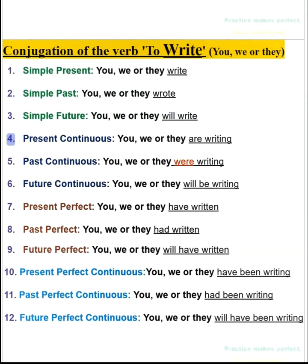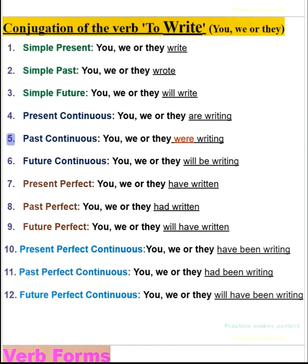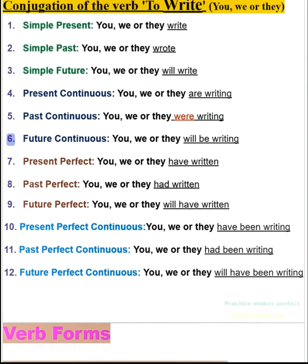4. Present continuous: you, we or they are writing. 5. Past continuous: you, we or they were writing. 6. Future continuous: you, we or they will be writing.